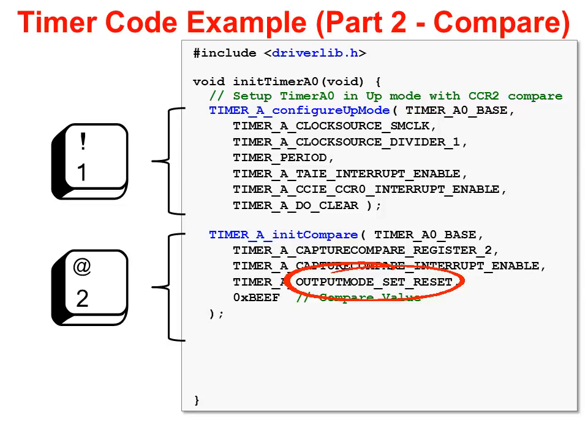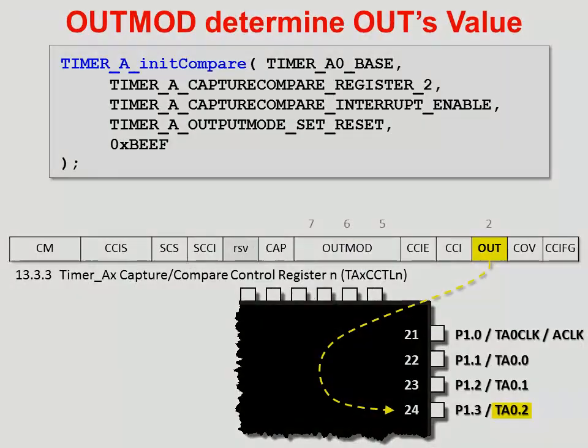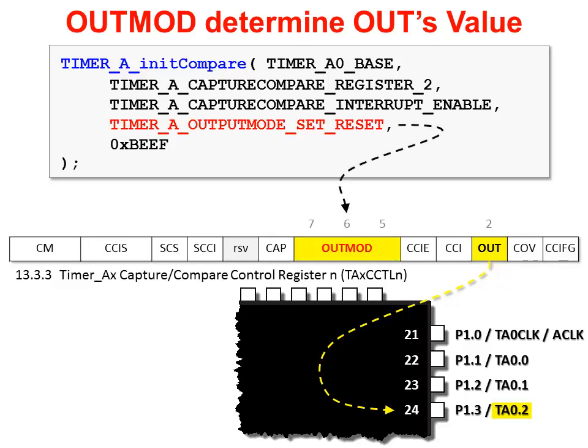Looking at the appropriate driverlib function, we can see just how easy it is to set up the CCR for compare. The Timer_A_initCompare function will, among other things, turn off capture mode — putting the CCR into compare mode. One of the first choices you need to make is which CCR to use; for our example, we chose CCR2. Next, do you want to interrupt the CPU whenever a match occurs? Then, how do you want the timer to treat the output signal? There are eight options for how the signal can be manipulated — for this example, we chose the output mode called Set/Reset. Finally, what compare value do you want to set into register CCR2?